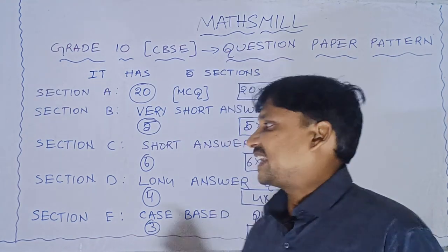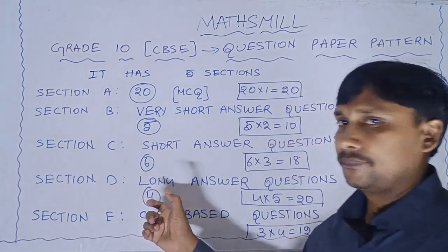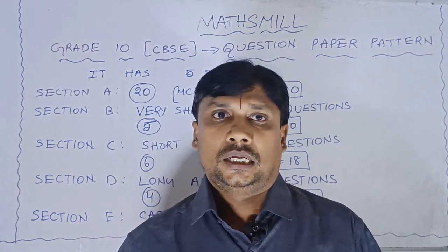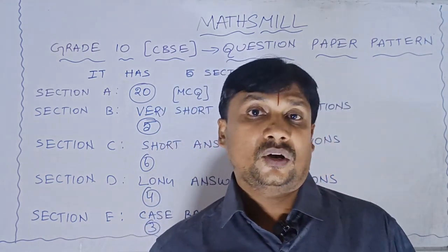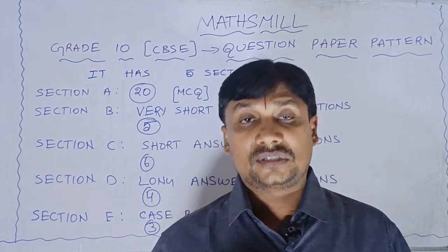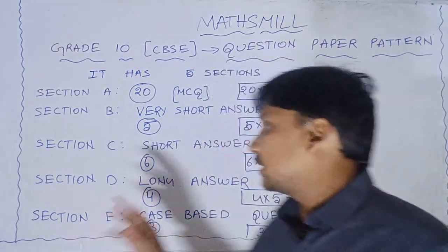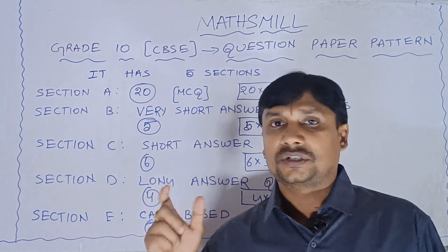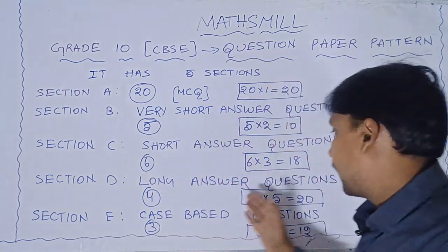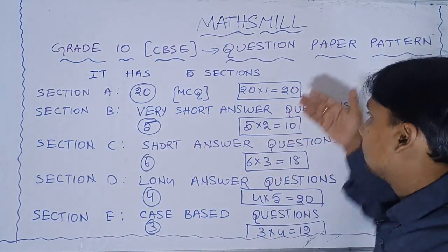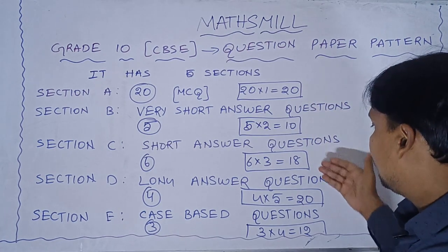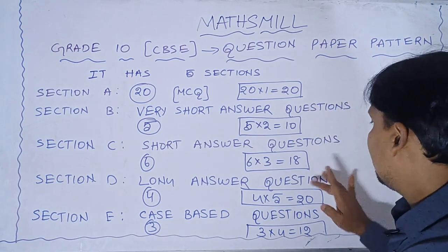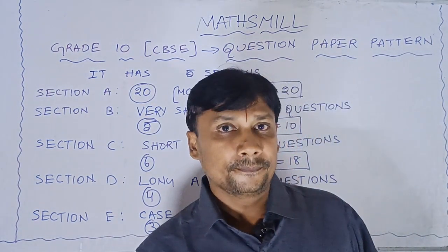Now coming to Section D, it consists of long answer questions — for example, applications of trigonometry. It consists of 4 questions, each carrying 5 marks, so that is 20 marks. The running total up to Section D is: 20 plus 10 plus 18 plus 20, which equals 68 marks.